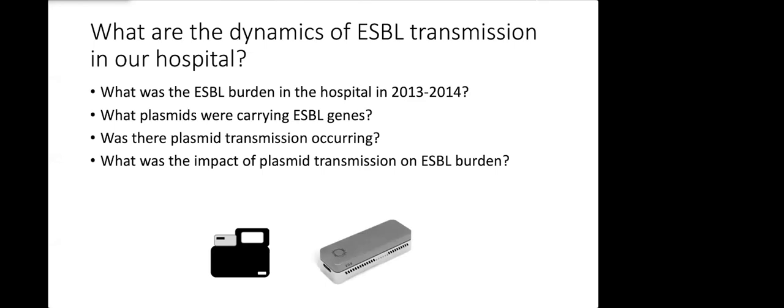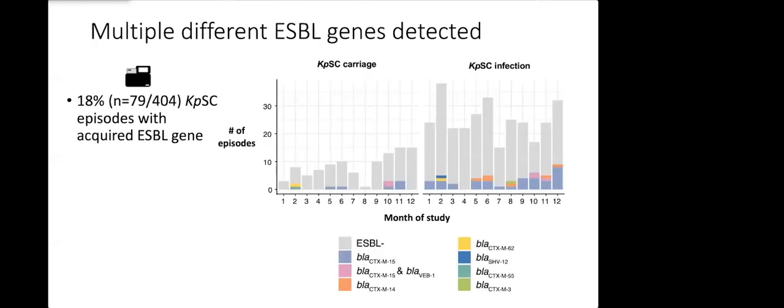We used a combination of Illumina and Nanopore sequencing to answer this question. So we took our 440 genomes and the first thing we did is we de-replicated them so that we only had one genome per episode. That made sure we had a unique genome per patient and per body site to remove any duplicates.